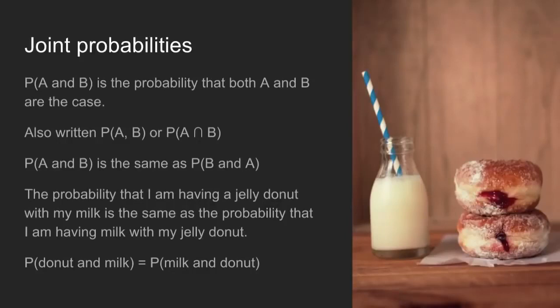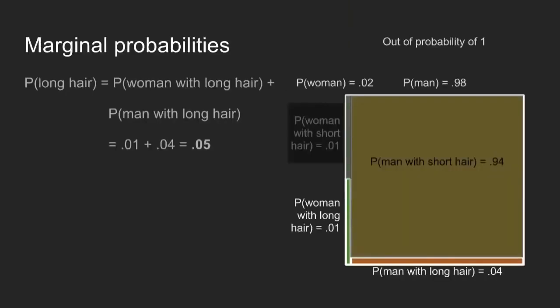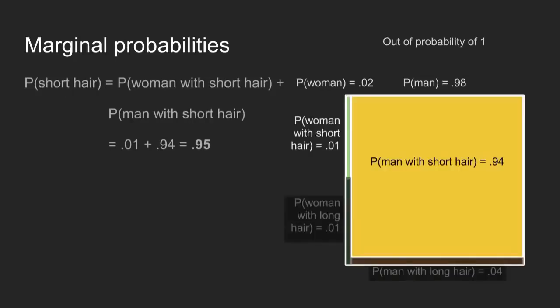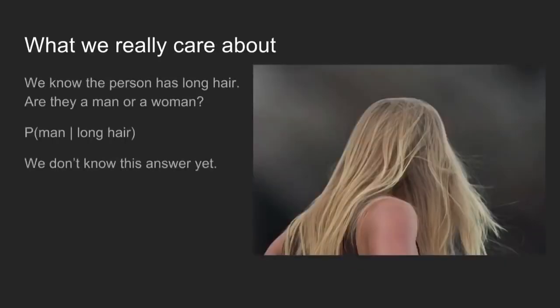Concept three: marginal probabilities. If I want to figure out the probability that someone has long hair, I just add up all the different ways that someone can have long hair — they can be a woman with long hair or a man with long hair. In the men's restroom line, that's a 1% probability plus a 4% probability, for a 5% probability overall. And for short hair: 95%. This last concept finishes our foundation, and we can get to what we really care about: we know that this person has long hair — what's the probability that they are a man or a woman? This is a conditional probability, but it's the reverse of the one that we know, and we don't know how to answer this yet.